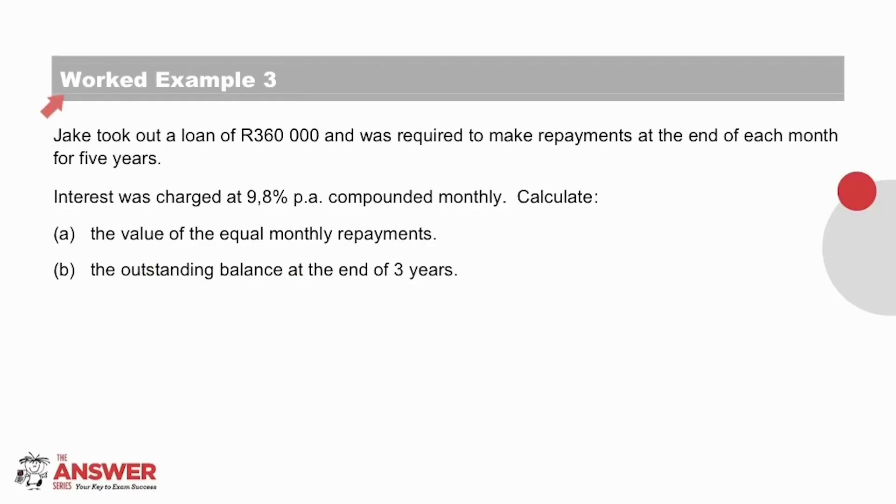Let's have a look now at worked example 3, which says Jake took out a loan of 360,000 rand and was required to make repayments at the end of each month for 5 years. Interest was charged at 9.8% per annum compounded monthly. Calculate in A the value of the equal monthly repayments and in B the outstanding balance at the end of 3 years.